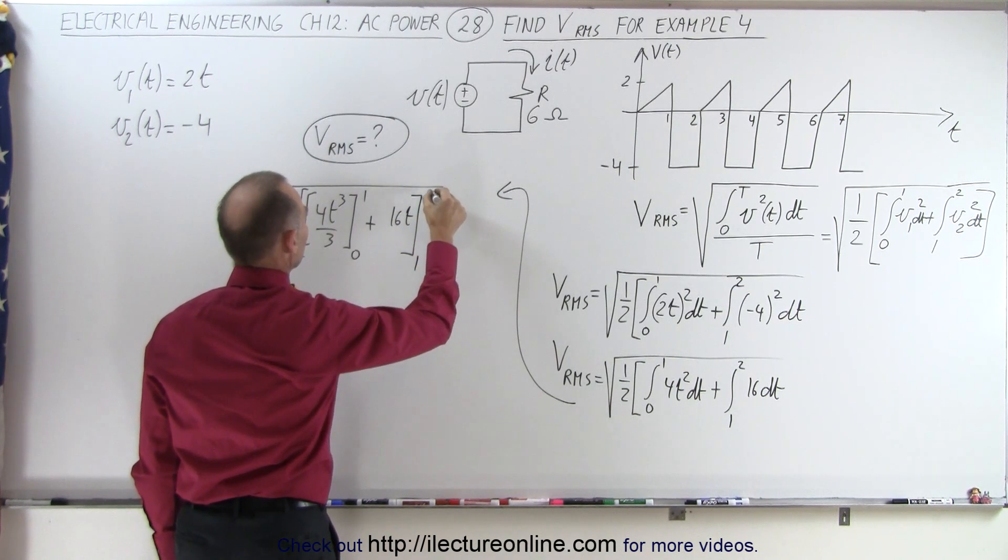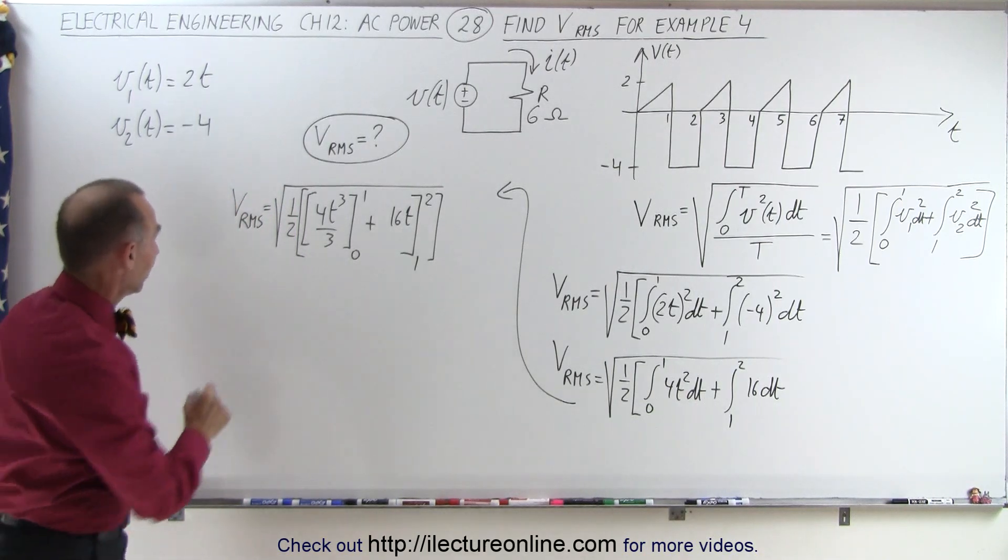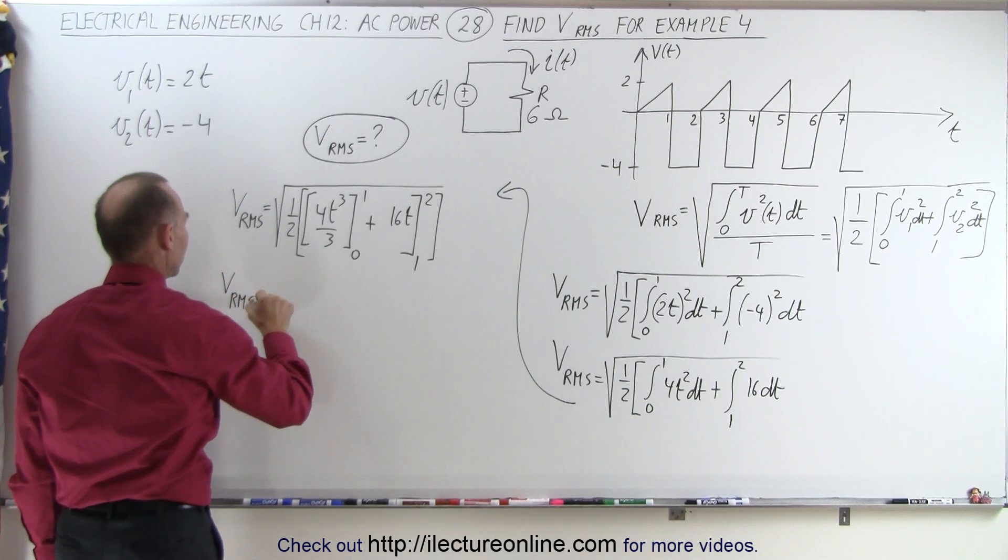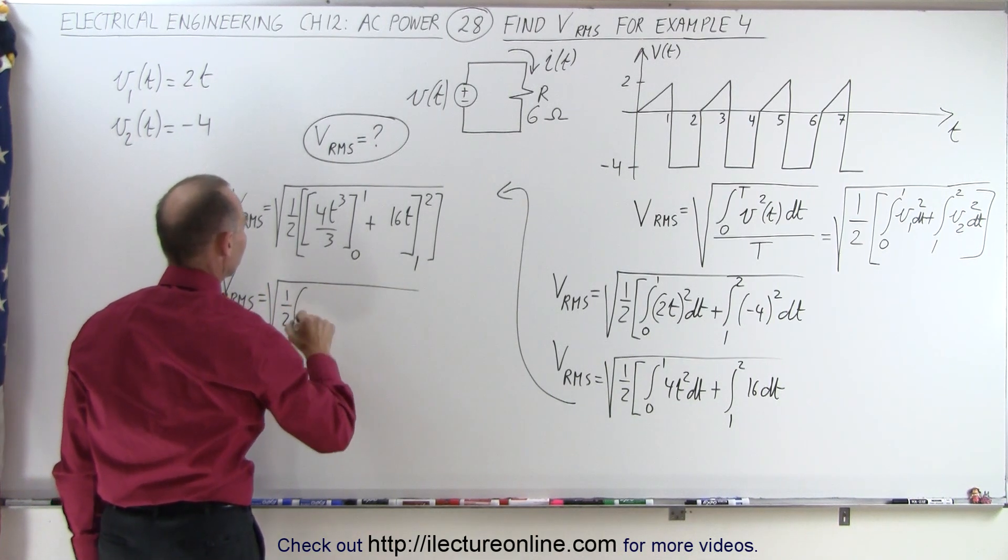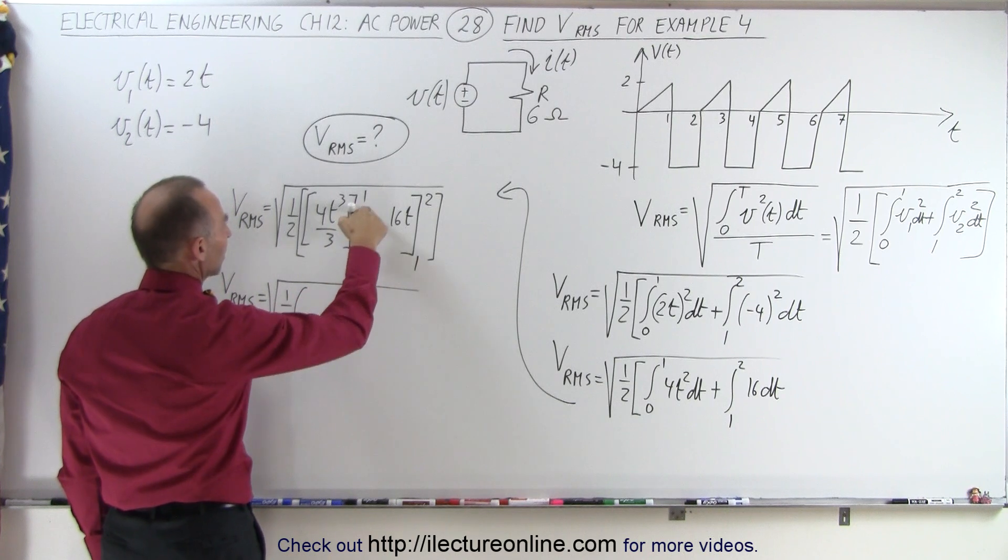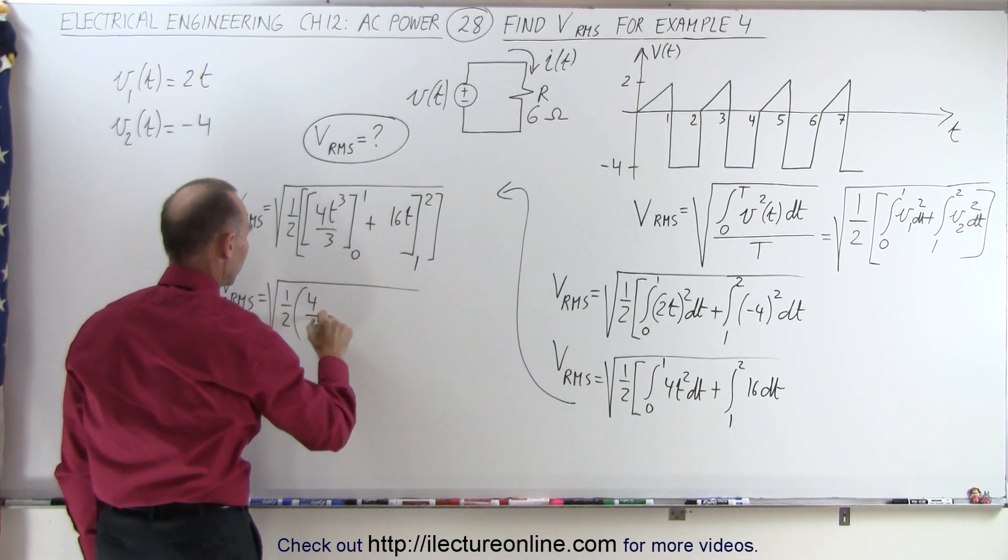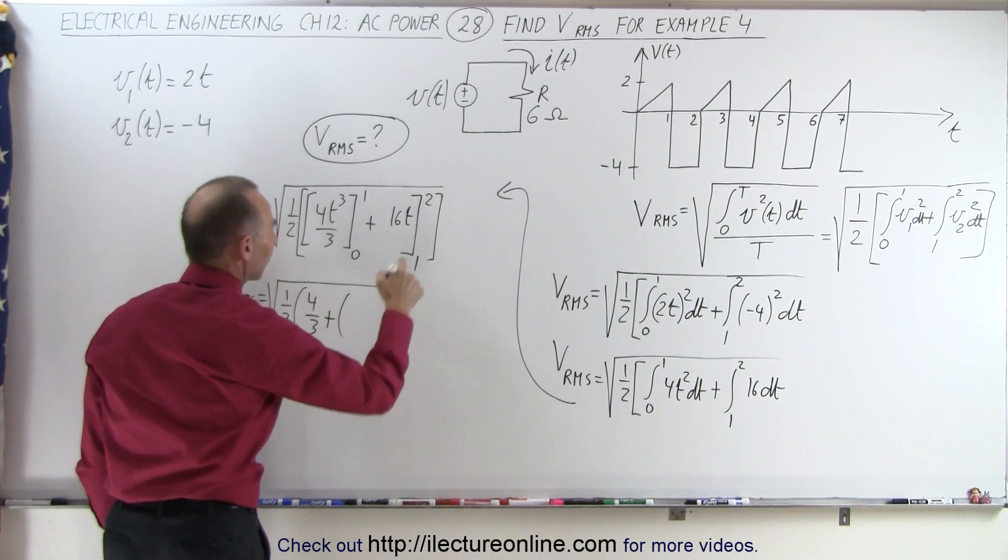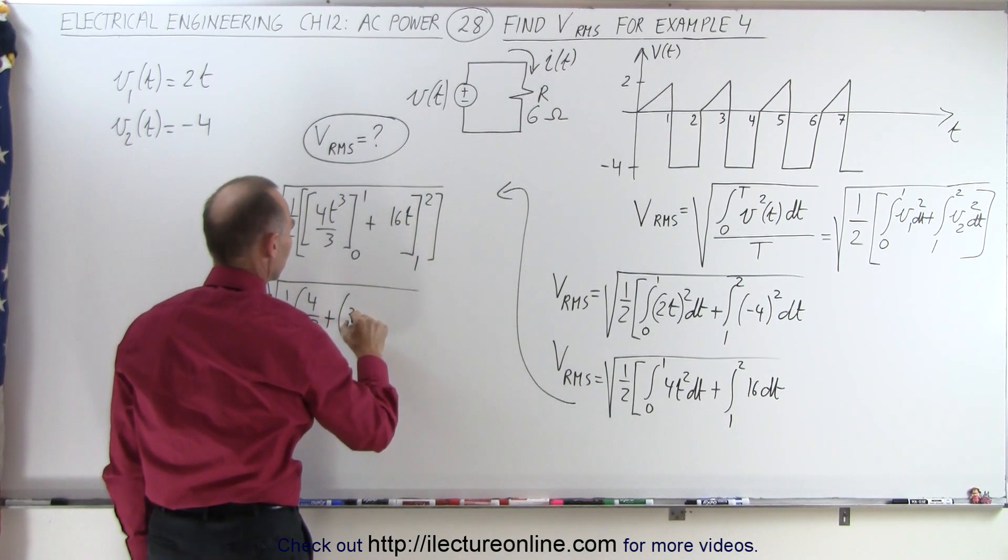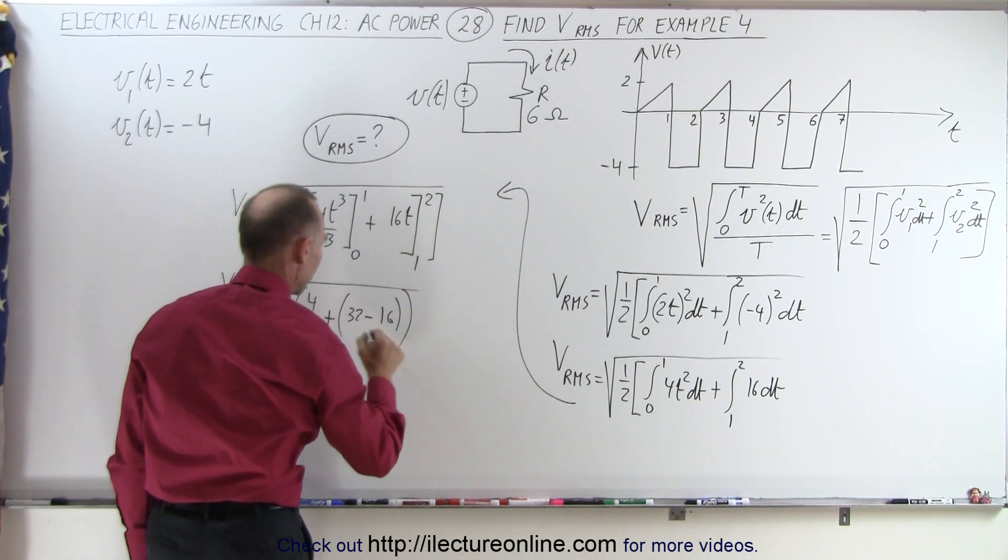And let's see, we'll close the bracket here. All right, I think we have that so far. So VRMS is equal to the square root of 1 half times, when plugging the upper limit here, we get 4 thirds. Plugging the lower limit, we get 0, so that gives us 4 thirds. And then plus, here we have, when plugging the upper limit, we get 32, minus, when plugging the lower limit, we get 16.